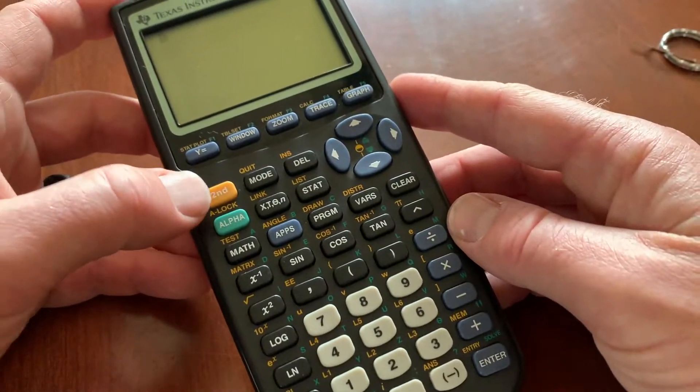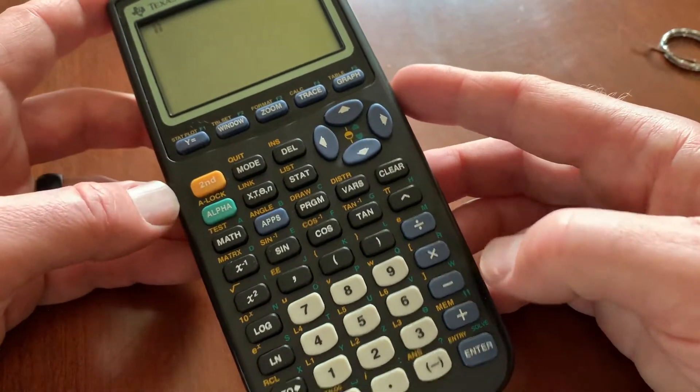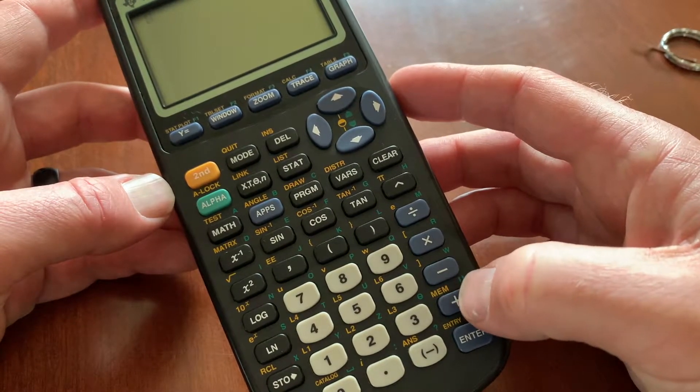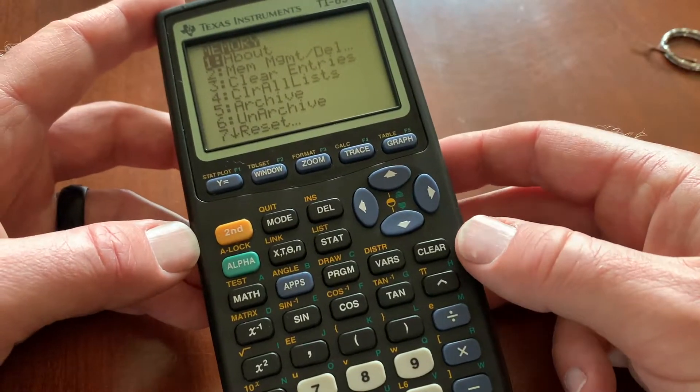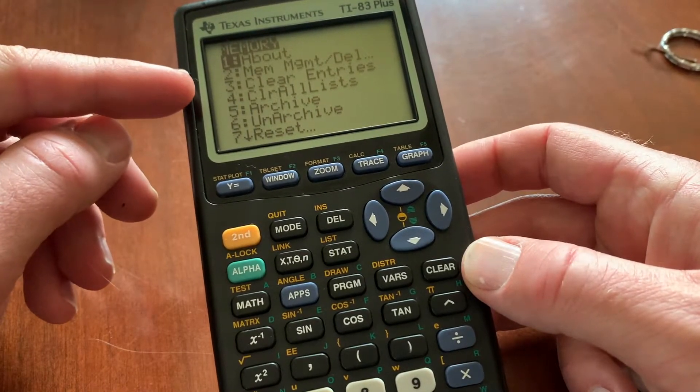What we're going to do is hit the second key, and then we're going to hit the plus button down here, or in this case, it's the mem, the memory key. We're going to hit that. And as you can see, we get a little menu option that comes up.